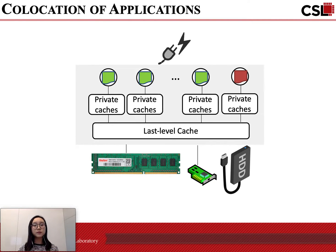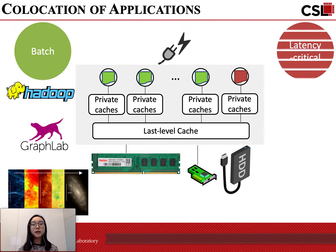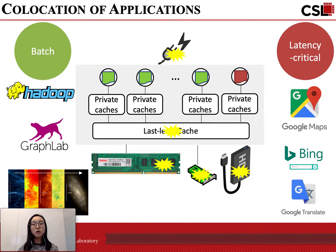There are mainly two types of data center applications: batch best-effort jobs and latency-critical interactive jobs. The interactive jobs have strict quality of service requirements in terms of tail latency, so they need special attention when being co-located, since co-located jobs contend for shared resources, which leads to performance unpredictability and QoS violations.